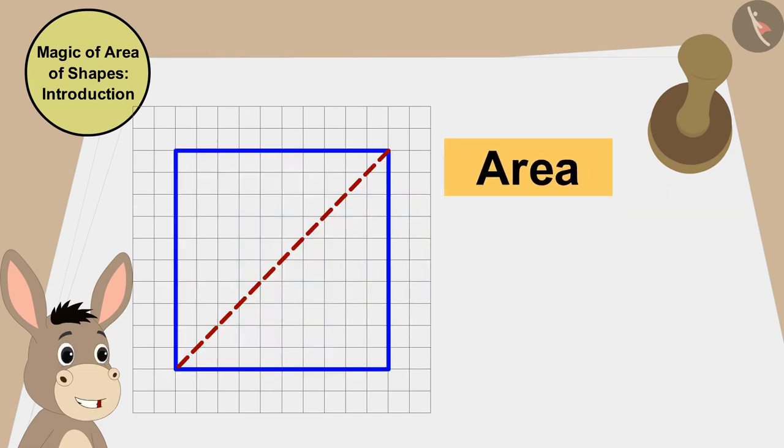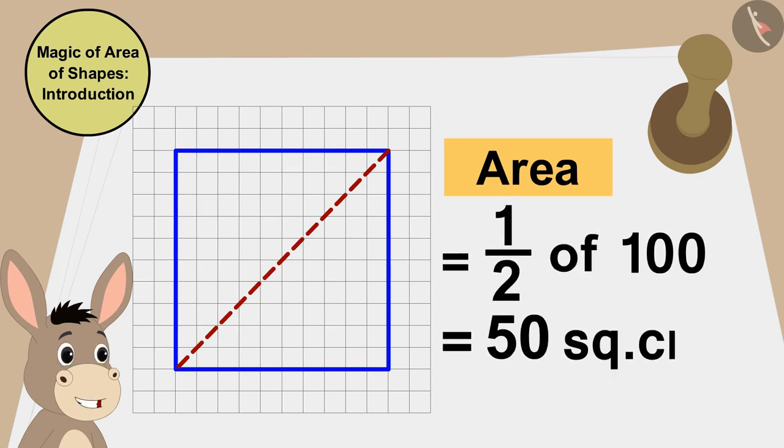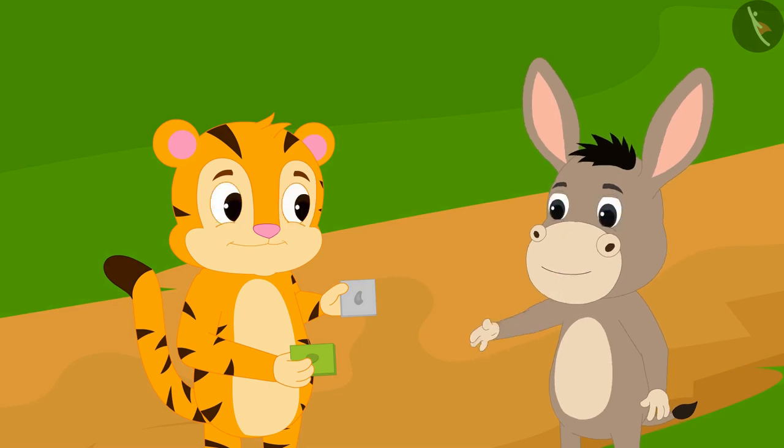And because both triangles are half of this cashew barfi, both of the areas of the triangles will be half or 50 square centimeters of the area of cashew barfi. Bhoola told Sher Khan.